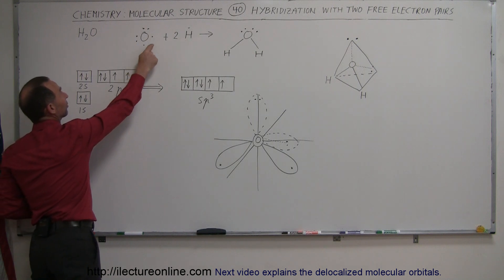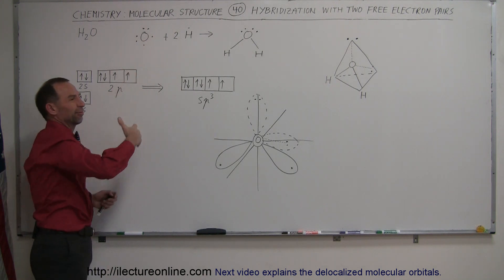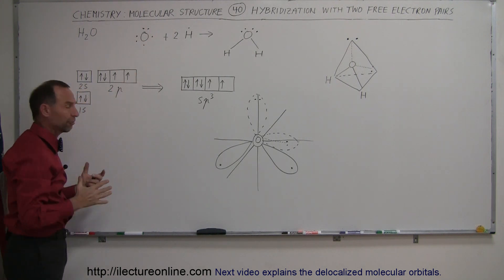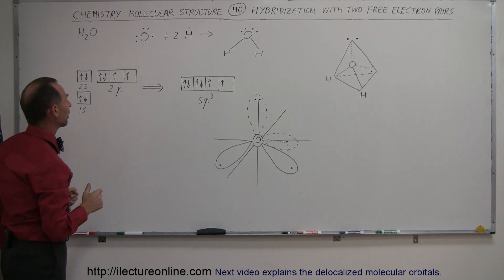In the case of water, H2O, we have an oxygen atom that has six free electrons—six valence electrons, I should say. They're not free, they're valence electrons in the valence shell.